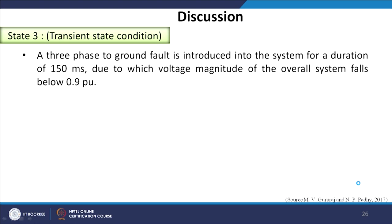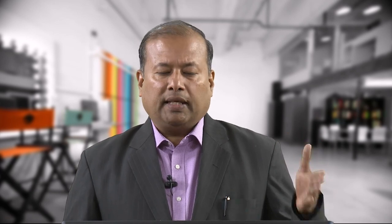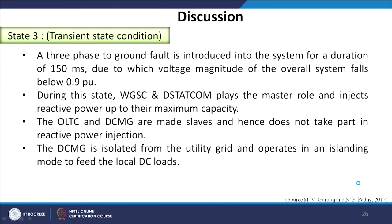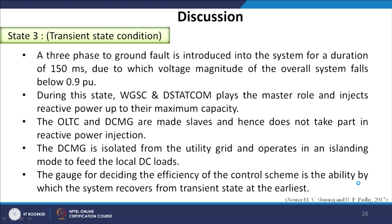Moving to the transient state: a three-phase to ground fault is introduced into the system for a duration of 150 milliseconds, causing the voltage magnitude of the overall system to fall below 0.9 per unit. During this state, both WGSC and DSTATCOM play the master role and inject reactive power up to their maximum capacity. The OLTC and DC microgrid are made slaves and do not take part in reactive power injection under transient state conditions. The DC microgrid is isolated from the utility grid and operates in islanding mode, feeding the local DC loads.